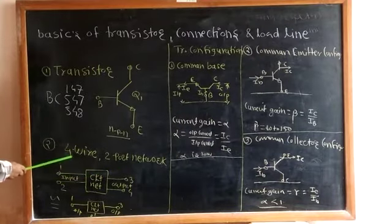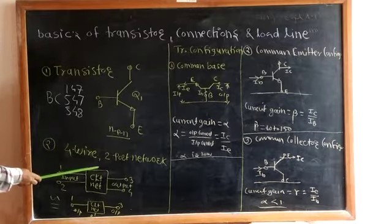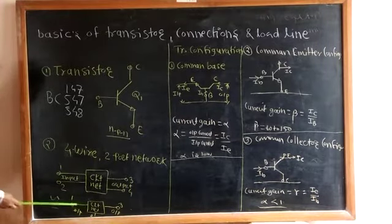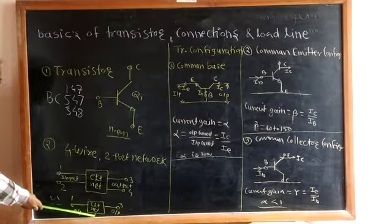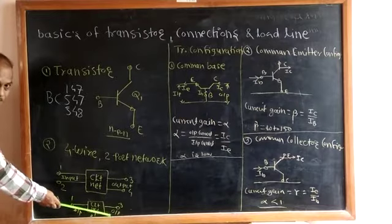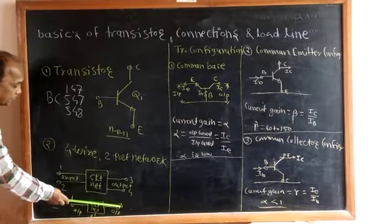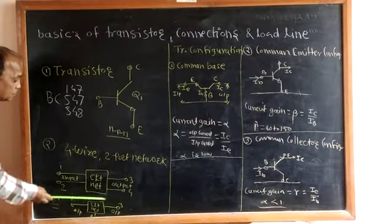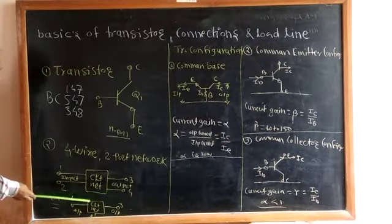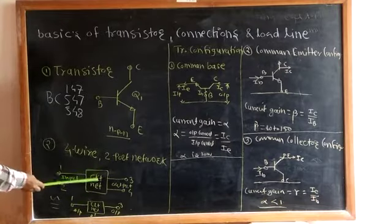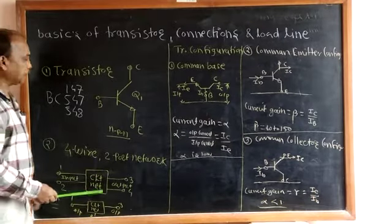Instead of four wires, I can use three wires. For that purpose, we use one wire for the input side, the second wire is common between the input side and output side, and the third wire is for the output side. So by using only three wires, we can make four-wire connections. This is the three-terminal connection.